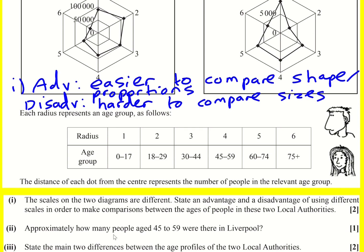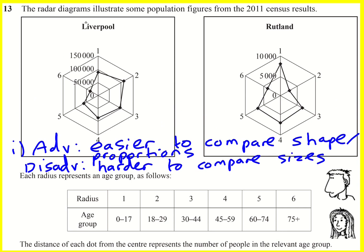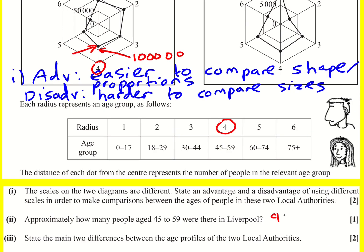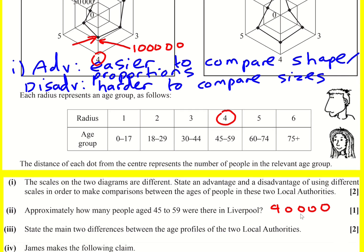In part two, it asks approximately how many people aged 45 to 59 were there in Liverpool. I'm looking at the diagram on the left, at the 45-to-59 axis. The scale goes 50,000, 100,000, 150,000 — so I'm going to read off approximately 90,000. A range of values are accepted — I think 75,000 to 95,000 — and even saying less than 100,000 might get some credit, but putting in a specific number is a good idea.